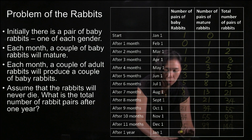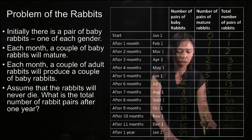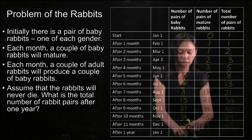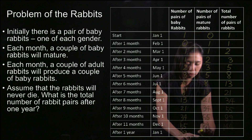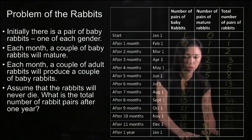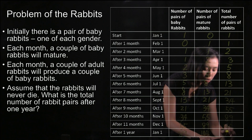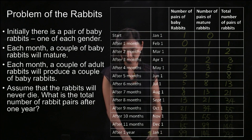After one year, we will have 89 pairs of baby rabbits given by the 89 pairs of mature rabbits. The previous 55 baby pairs mature, and the 89 mature pairs survive, giving 144 pairs of mature rabbits. Adding up, we have 233 pairs of rabbits after one year.